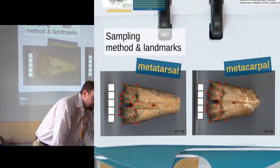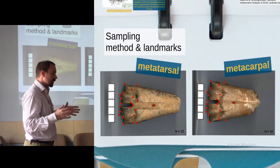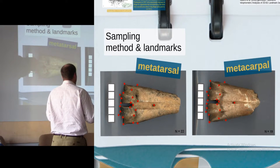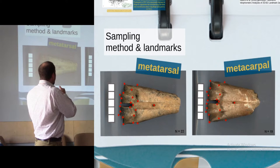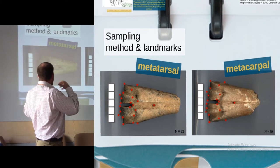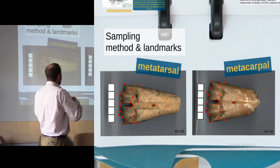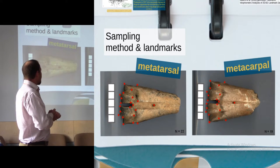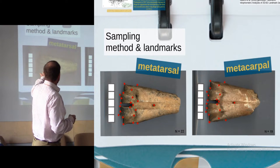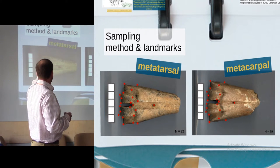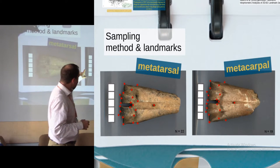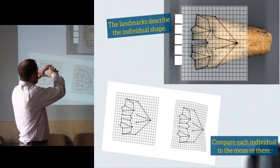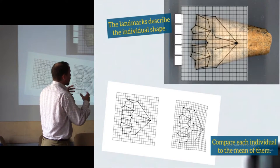The researchers have to define these points and landmarks. These landmarks have to be general, have to be well identified, and have to be exact and repeatable points of the object or the bones or the animals. In my case, I defined 22 landmarks in the metatarsals and 19 landmarks in the metacarpals. These landmarks describe the shape of the object or the bones.